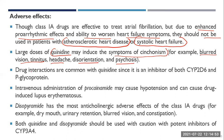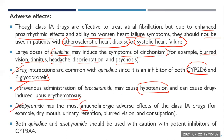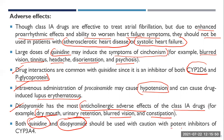Cinchonism presents as blurred vision, tinnitus (ringing sound in the ear), headache, disorientation, and psychosis. Drug interactions are common with quinidine because it is an inhibitor of both CYP2D6 and P-glycoprotein. Intravenous procainamide may cause hypotension and drug-induced lupus erythematosus. Disopyramide has the most anticholinergic adverse effects of Class 1a drugs, including dry mouth, urinary retention, blurred vision, and constipation. Both quinidine and disopyramide should be used with caution with potent inhibitors of CYP3A4.